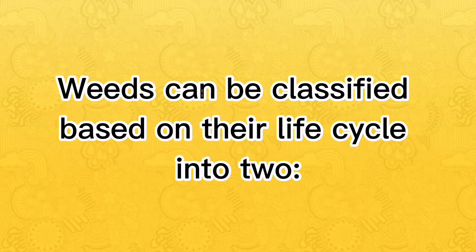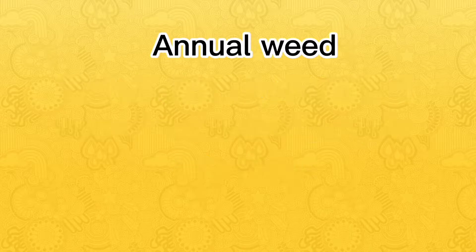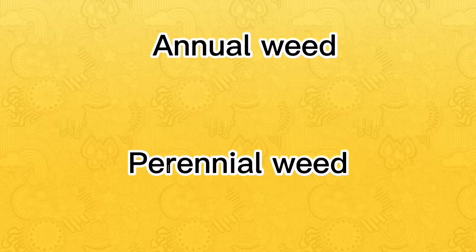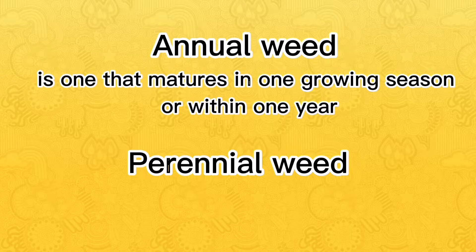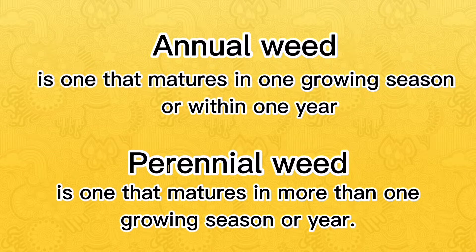Weeds can be classified based on their life cycle into two: annual weed and perennial weed. Annual weed is one that matures in one growing season or within one year. Perennial weed is one that matures in more than one growing season or year.